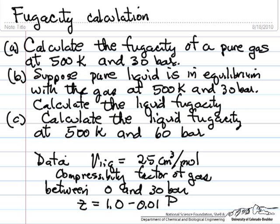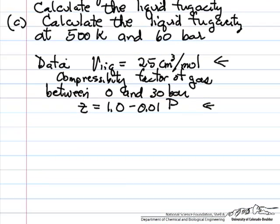So we're given the volume of the liquid, and we're assuming that it's constant over this pressure range, and we're using a compressibility factor that's a simplified form, basically to make the calculations easy and demonstrate what we're trying to show.